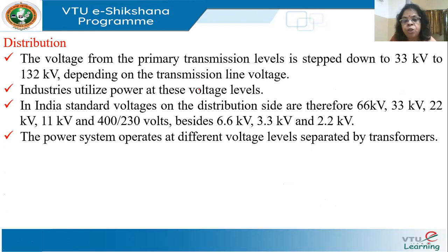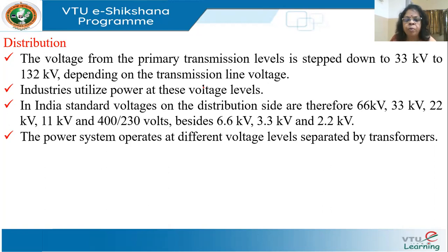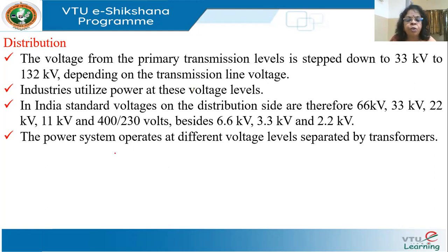During transmission, voltage is stepped up to 220 kV or 400 kV. For distribution, it is stepped down from 132 to 33 kV. Industries may evacuate power at around 66 kV or 33 kV, while domestic consumers normally require power at around 400 to 230 volts. Different countries have different distribution operating levels, such as 6.6 kV, 3.3 kV, and 2.2 kV.